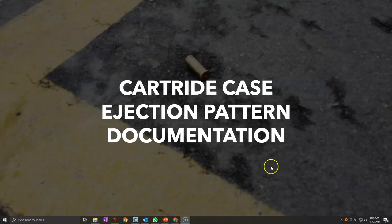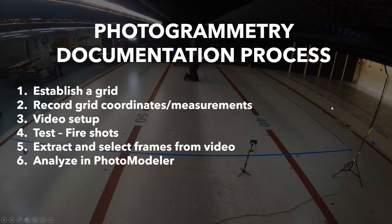I'm going to fire up PhotoModeler and walk through this step by step. It's a bit involved, but remember what it allows you to do — record a very large number of cartridge cases, not just five or ten. If you're doing a very small amount, you may as well do it by hand. The process is: establish a grid and record its coordinates, set up the video cameras, fire the test shots, extract selected frames from the video, then do the analysis in PhotoModeler.